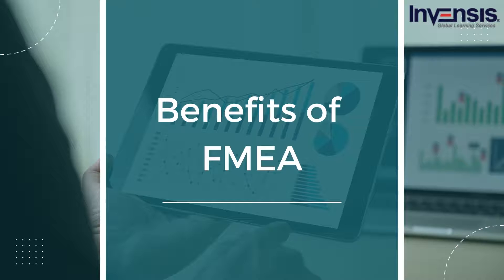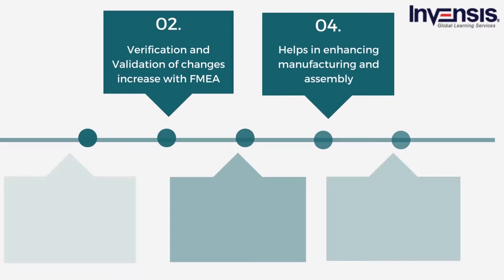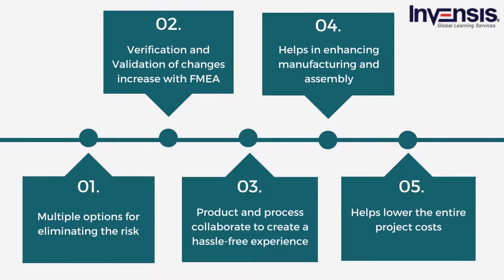FMEA consists of many tools to help companies detect failure as early as possible in the process or product design stage. FMEA provides companies with benefits such as multiple options for eliminating risk, increased verification and validation of changes, and collaboration between product and process to create a hassle-free experience. It also helps in enhancing manufacturing and assembly, and finally it helps lower the entire project costs.